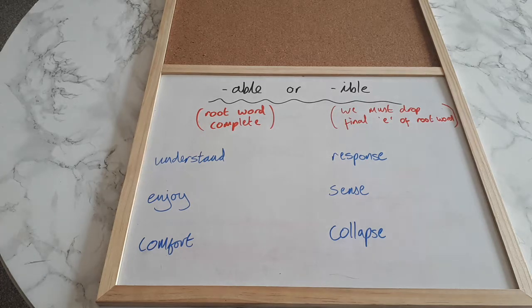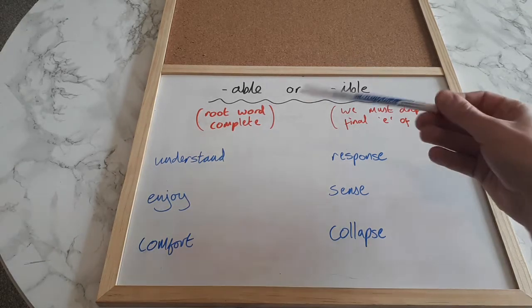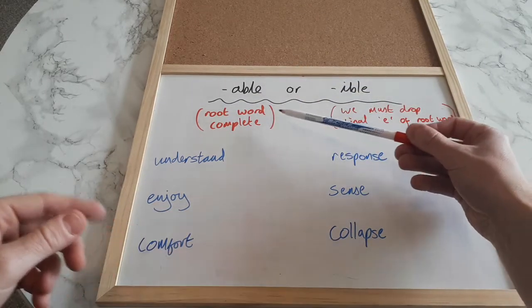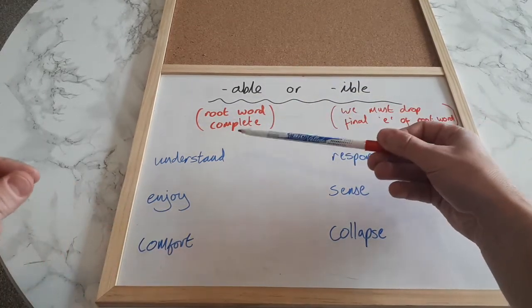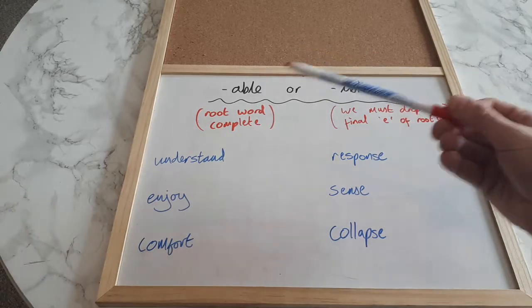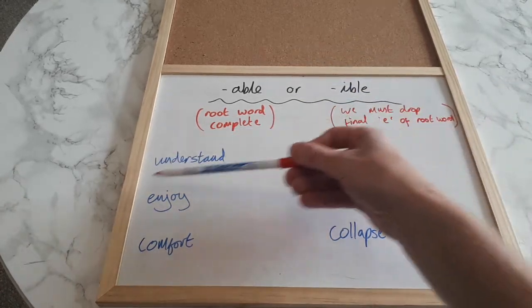So we begin with a noun and we can create an adjective. There's a little rule that we can use to decide if it's an -able or an -ible spelling and I've written the rule on here. So if it's -able, the root word will always remain complete if we take the -able off or if we add it on. We don't have to do anything to that root word.